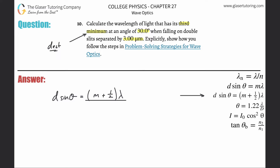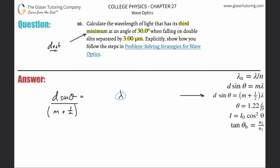We need to calculate the wavelength, so we're going to rearrange and solve for it. Here's the formula for wavelength now. We have everything we need — we just have to make sure we're in the right units and careful about the m value. Check out number nine; I mentioned what to do with m there.